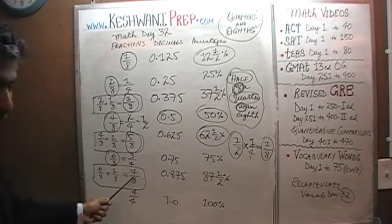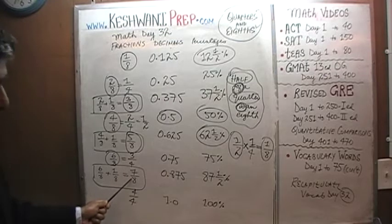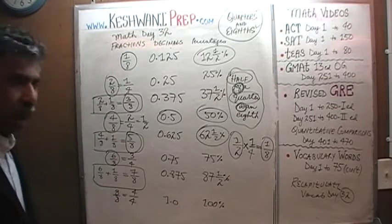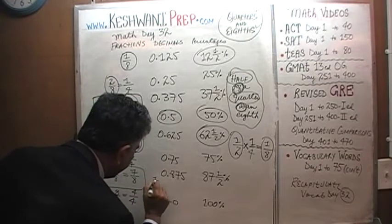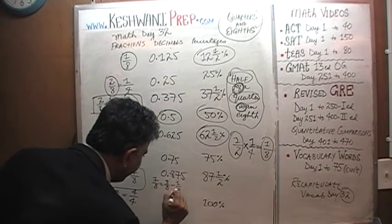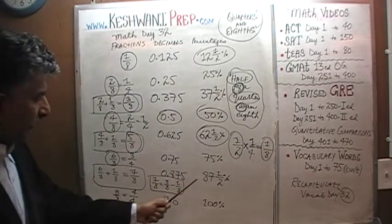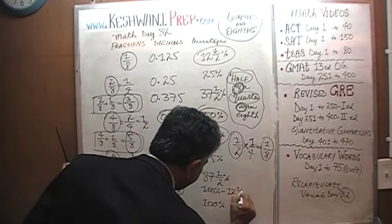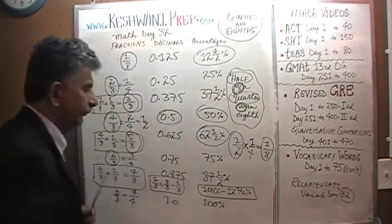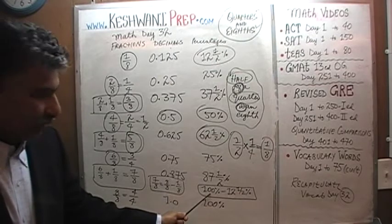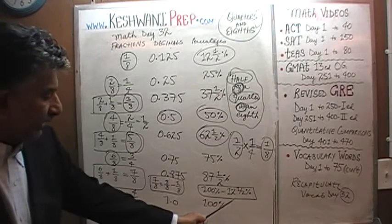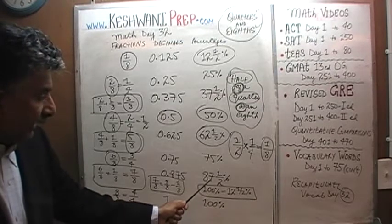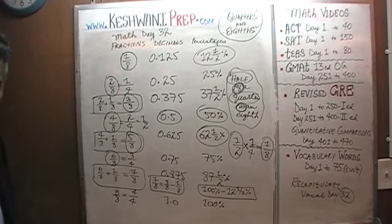Another way to figure out seven eighths: realize that seven eighths equals eight eighths minus one eighth. Eight eighths is 100%, minus 12.5% gives 87.5%. So you can either take away one eighth from eight eighths, or add one eighth to six eighths — either way you get seven eighths.